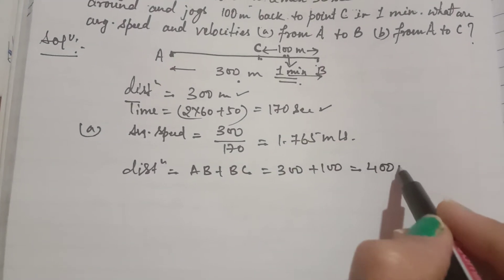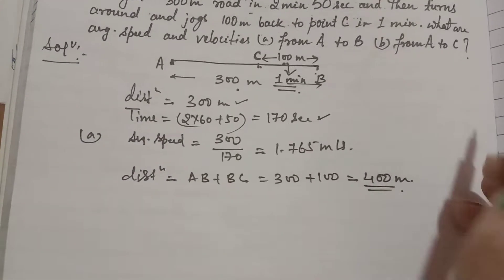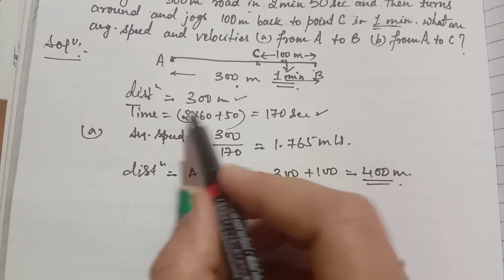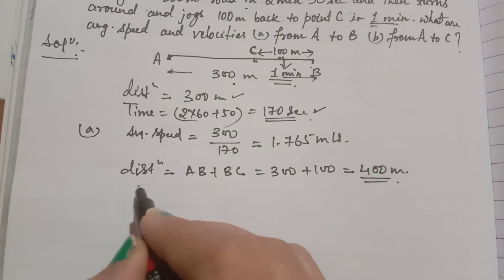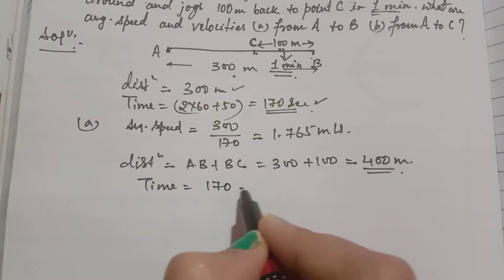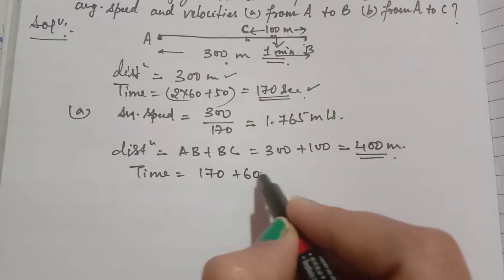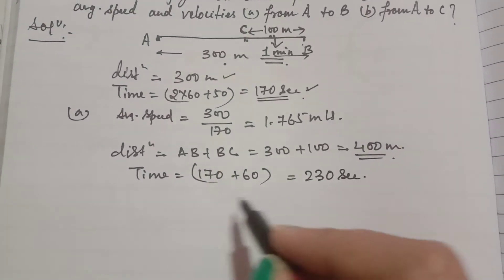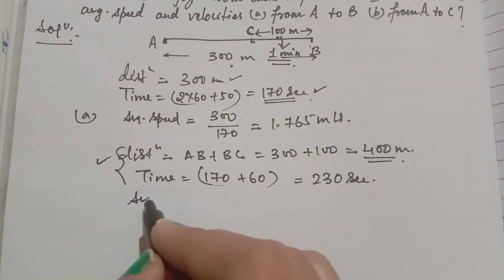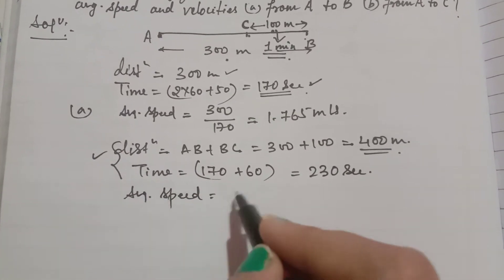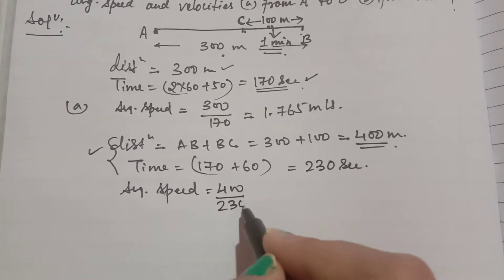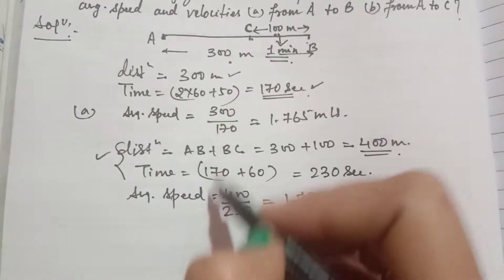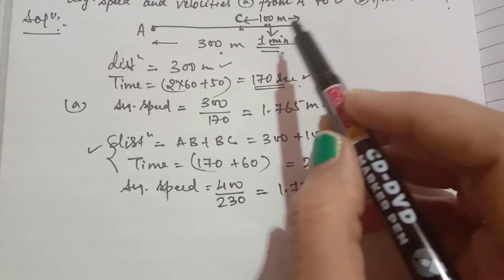Total time: previous time was 170 seconds, plus 1 minute (60 seconds) = 230 seconds. In this case, speed equals distance divided by time: 400 ÷ 230 = 1.739 meters per second. That gives us the speed for both cases.